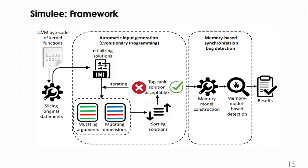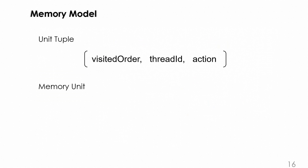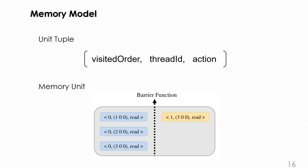In order to construct the memory model, we have to define unit tuple first. Unit tuple is used to record the memory access information made by a single thread. A memory unit corresponds to a single memory address, which contains multiple unit tuples. The visit order is created by barrier function only. All the accessed records are stored in a memory unit.